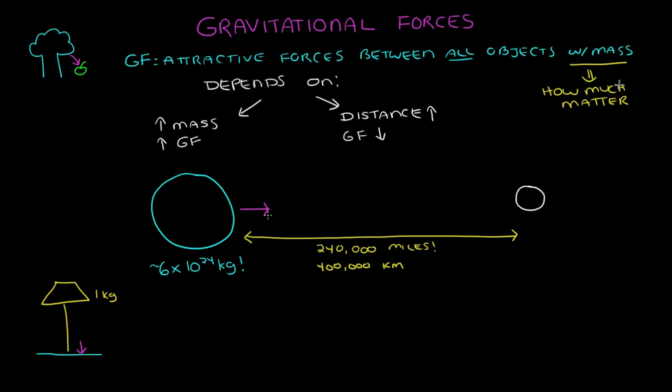But since the Moon is also a pretty massive object, we do experience the effects of its gravitational pull on the Earth. This is why we have tides. The Moon's gravitational force will pull on Earth's water, which results in us having high and low tides.